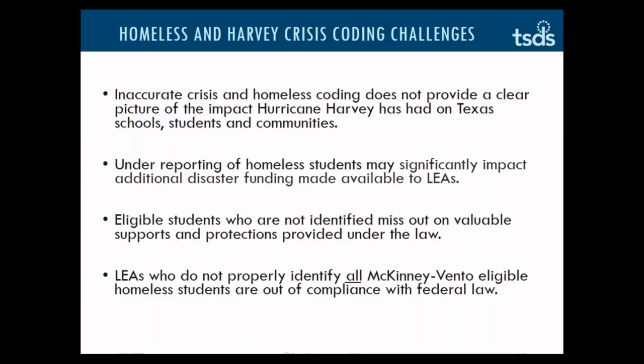Additionally, eligible students who were not identified miss out on valuable supports and protections provided under the law and available within your school district. For example, the child's right to remain in the school they were attending when they became homeless, also known as the school of origin, the child's right to receive transportation to that school of origin, and other supports such as free and reduced-price lunch. Finally, LEAs who do not properly identify all McKinney-Vento eligible homeless students are out of compliance with federal law.